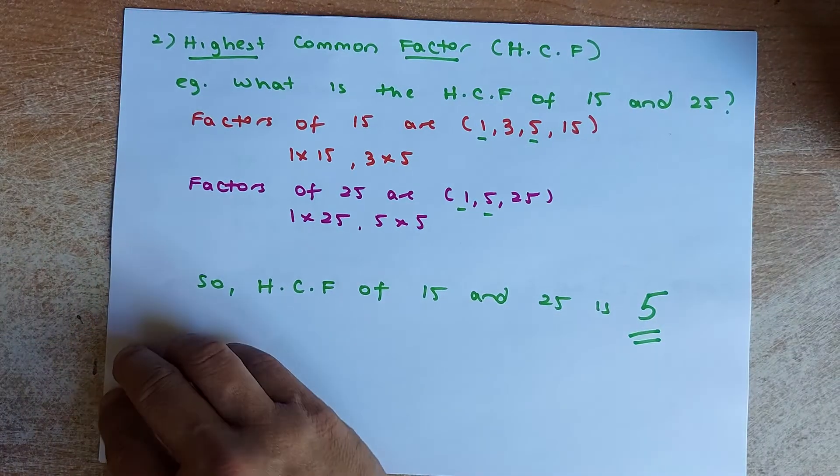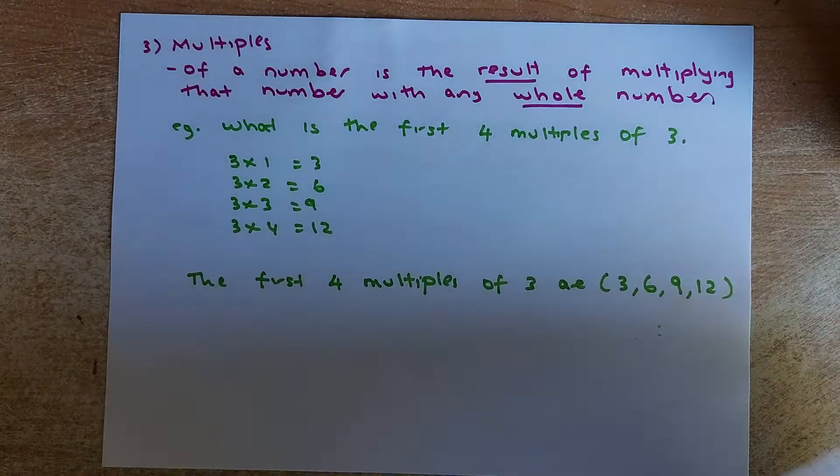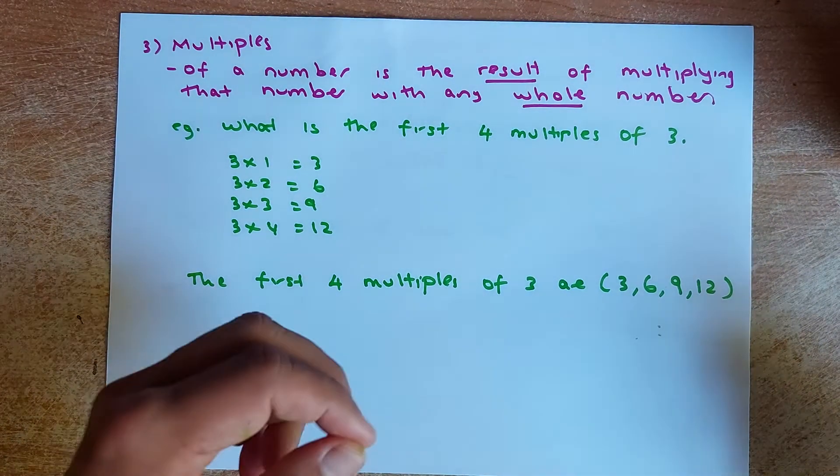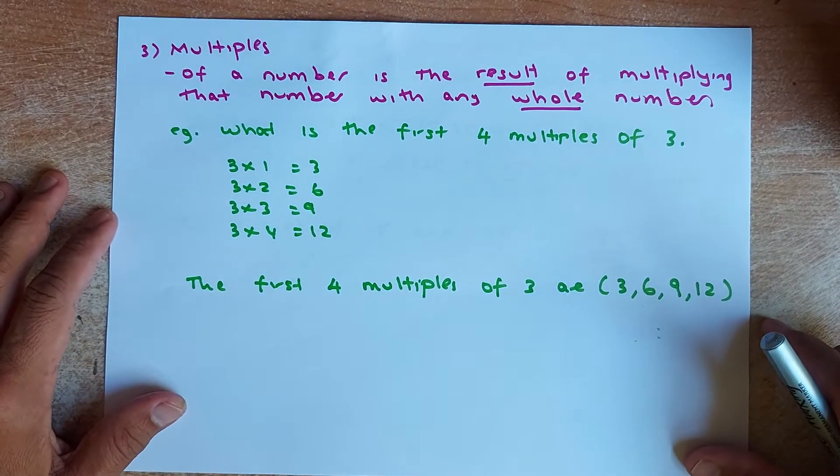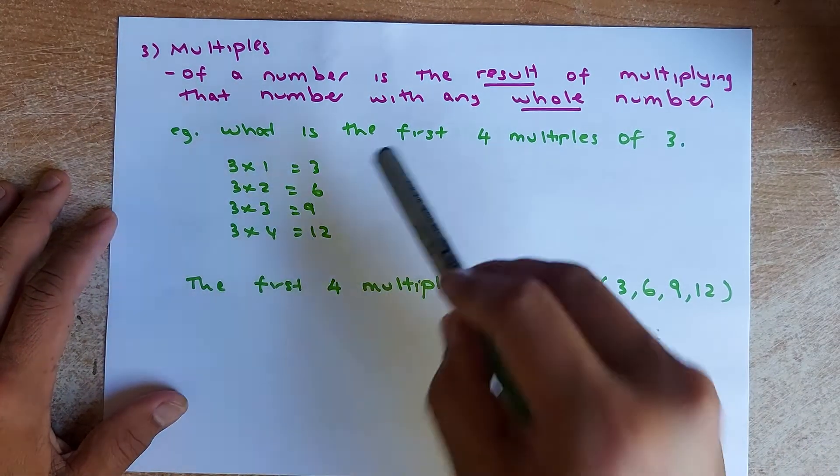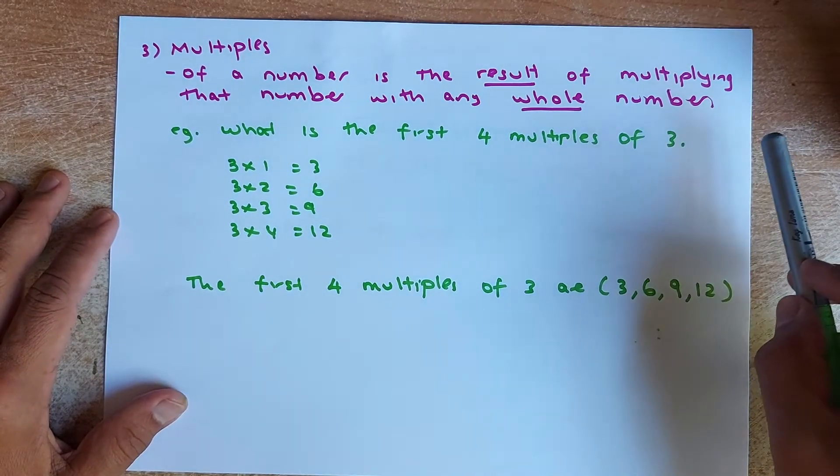Okay, we shall proceed. Now the next topic is called multiples. Most people get confused between factors and multiples, so listen carefully. Multiples of a number is the result of multiplying that number with any whole number, so you normally start with 1, 2, 3, 4, 5, and so forth.